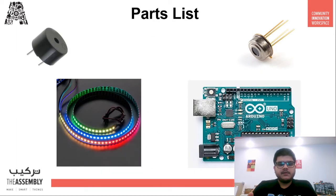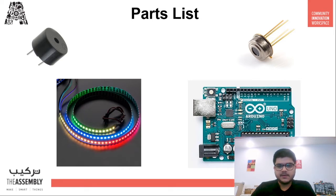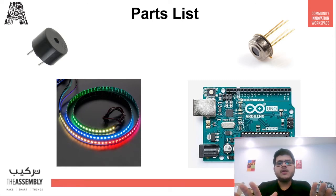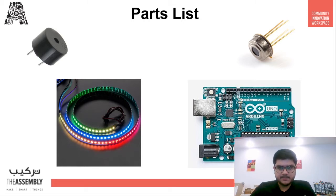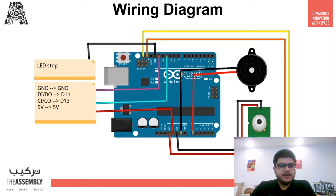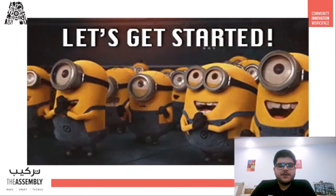The parts list is very simple: the MLX 90614 sensor itself, a buzzer, an LED strip — I'll be using a dot matrix strip — and an Arduino Uno. You can use any Arduino, such as an Arduino Nano, depending on how much space you have on your face shield or mask. There is also a link to the wiring diagram in the description below, and you can find all the code and wiring diagram in the GitHub repository.